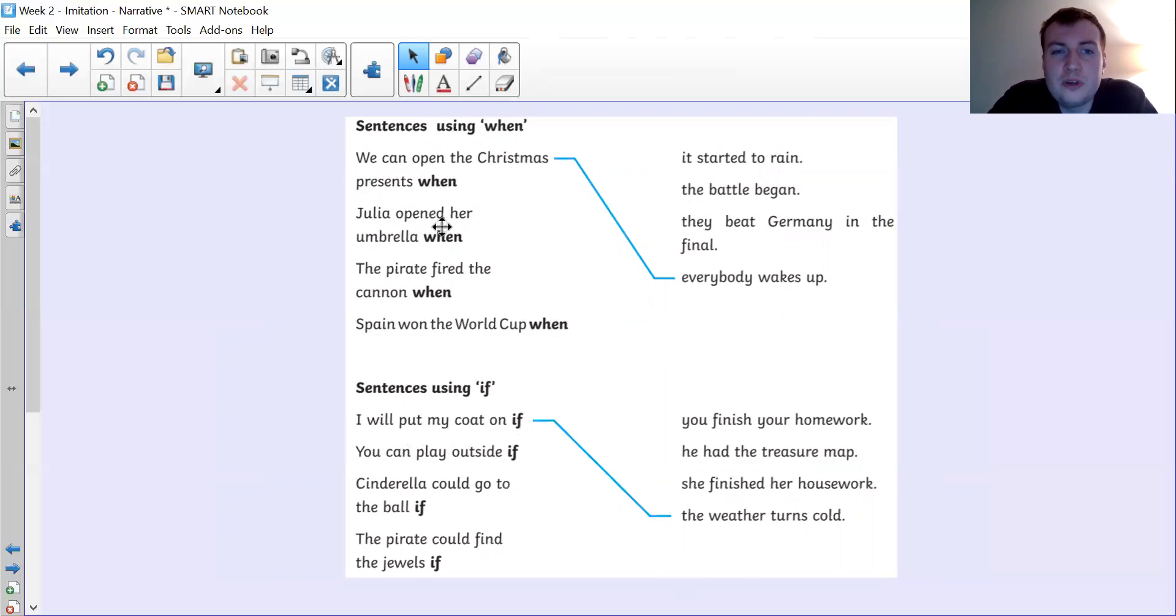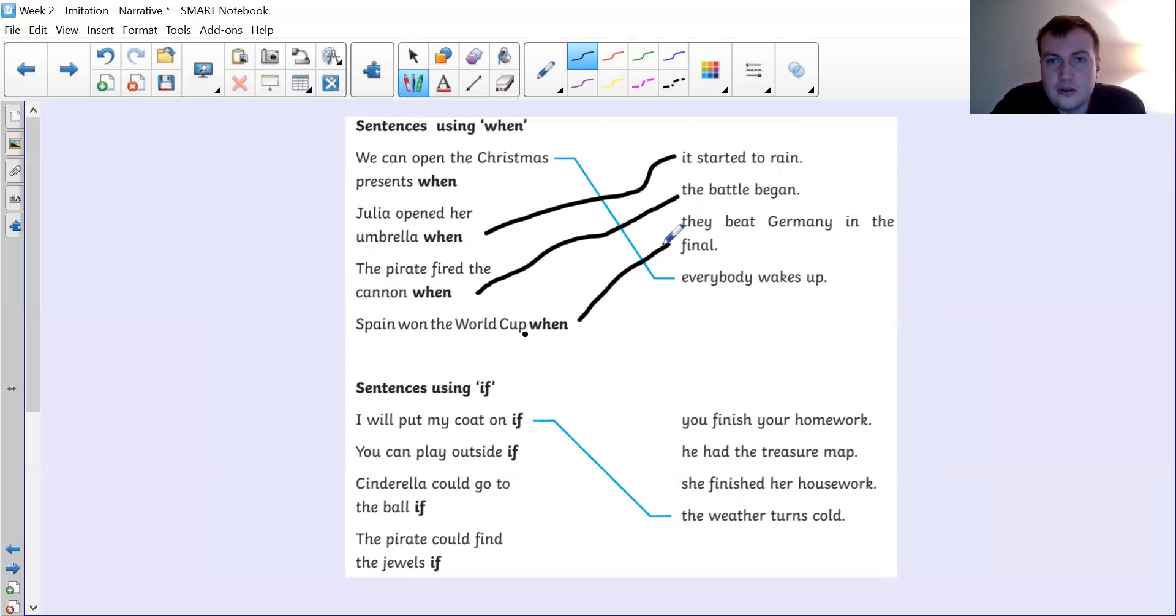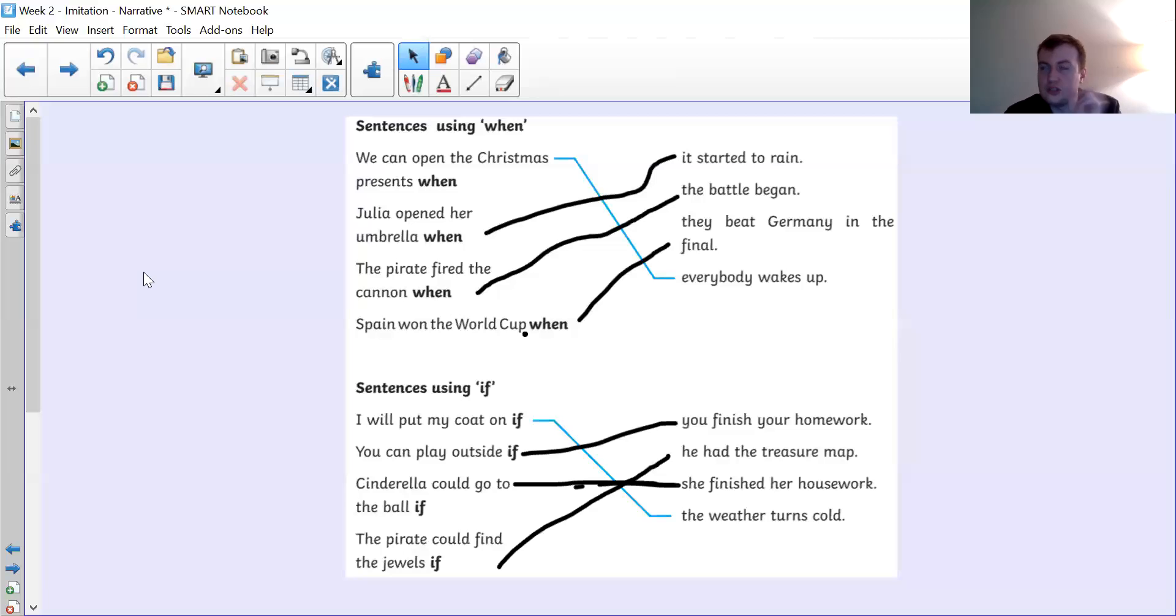So you need to match them, which ones will make sense. We did the first one for you. We can open the Christmas presents when everybody wakes up. I will put my coat on if the weather turns cold. You need to match the sentences and create a full sentence. Hopefully you got Julia opened her umbrella when it started to rain. The pirates fired the cannon when the battle began. And Spain won the World Cup when they beat Germany in the final. So here you've got Spain won the World Cup, that is a sentence all on its own. But they beat Germany in the final is not a sentence because who's they? You need more context. Next one, you can play outside if you finish your homework. Cinderella could go to the ball if she finished her housework. And then finally, the pirate could find the jewels if he had a treasure map. So well done if those were the ones you connected.